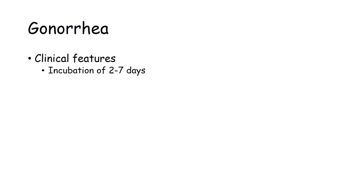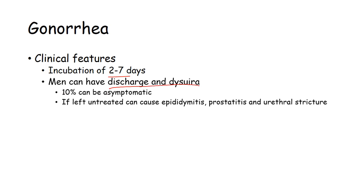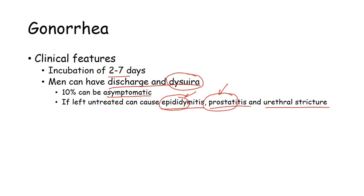The clinical features of gonorrhea include a 2 to 7 day incubation period. Men can have genital discharge and dysuria — a thick, yellowish discharge. 10% can be asymptomatic. If left untreated, it can cause epididymitis, prostatitis, or urethral stricture — infections of the epididymis, prostate, and urethra in men.